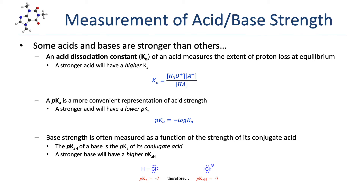pKa is really just a mathematical treatment of Ka — taking the negative log of a Ka value. With Ka's, the higher the value, the stronger the acid. But with pKa's, the lower the value, the stronger the acid. In fact, the strongest acids actually have negative values for pKa.